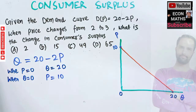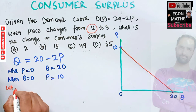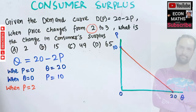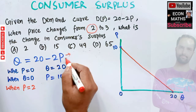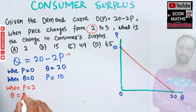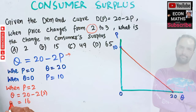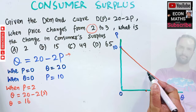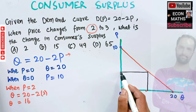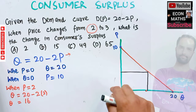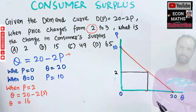Now the original price is 2. When price equals 2, the quantity demanded is Q = 20 minus 2 times 2 = 20 minus 4 = 16. So when price is 2, quantity demanded is 16. Let's mark this point on the graph — price is 2, quantity demanded is 16.